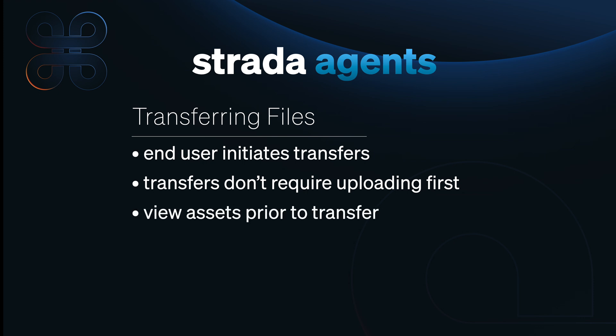Third, you can view assets before deciding what you download, so you never accidentally download files you might not need. And lastly, since you can see the files, you can prioritize which files you want first. For example, if I'm in a time crunch, I can prioritize the most important asset before downloading a larger batch.